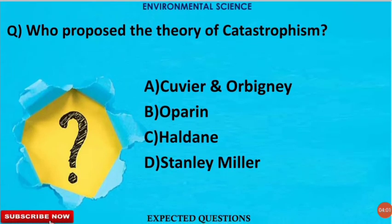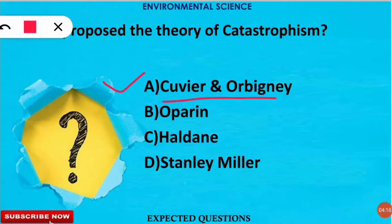The next question is: who proposed the theory of catastrophism? This is based on theories for the origin of life. The correct option is A — Cuvier and Orbigny proposed the theory of catastrophism. The word catastrophe means a huge or disastrous event. According to this theory, a fresh origin of life occurred after each catastrophic event that resulted in complete annihilation — that is, destruction or non-existence — of all living beings.